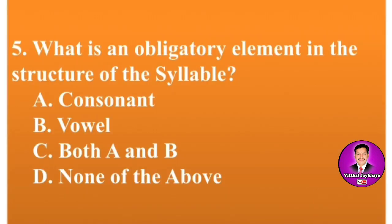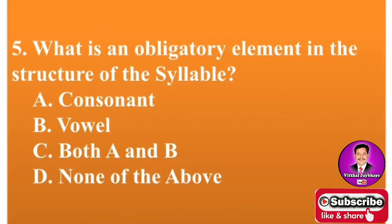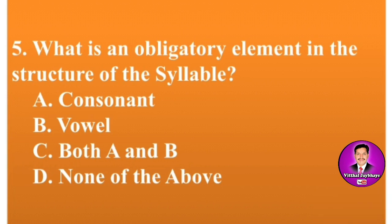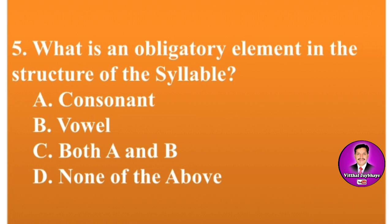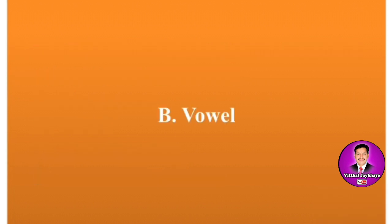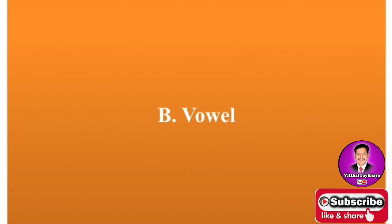Next MCQ: What is the obligatory element in the structure of the syllable? Options are A: consonant, B: vowel, C: both A and B, D: none of the above. This is a very important question. The correct answer is B — vowel. Vowel is the compulsory element in the syllable structure.